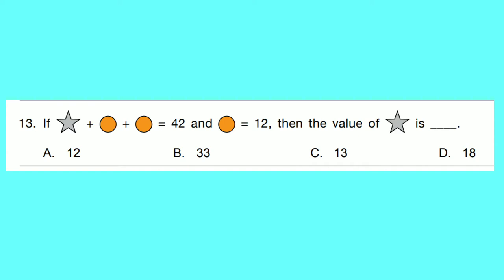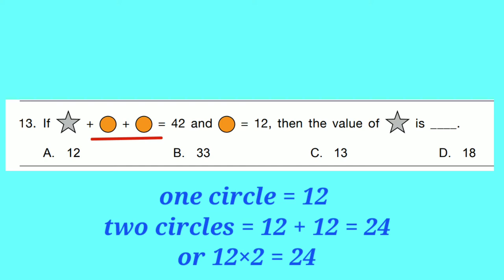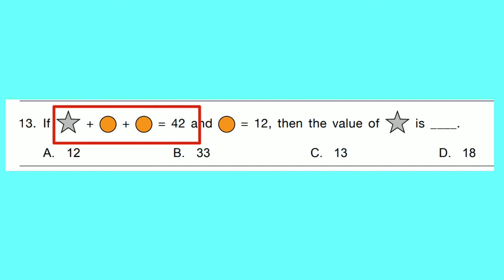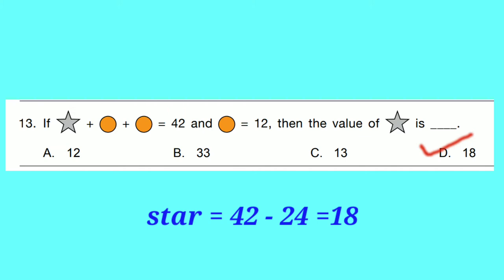Question number 13: If a star plus two circles equals 42, and a circle equals 12, then the value of the star is dash. Circle equals 12, so two circles equal 12 plus 12 equals 24. Subtracting two circles: star equals 42 minus 24 equals 18. Option D is correct: 18.